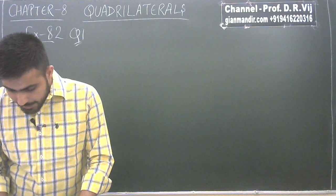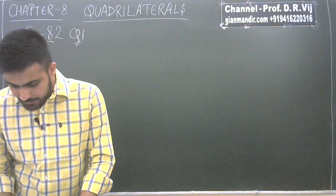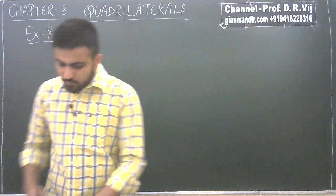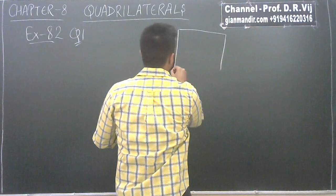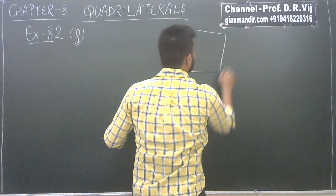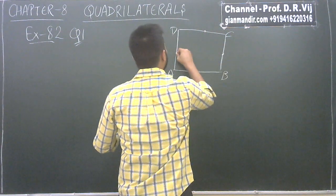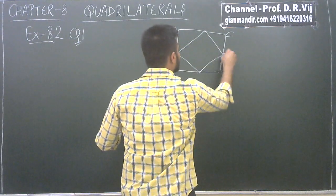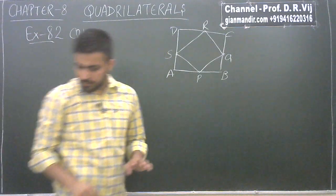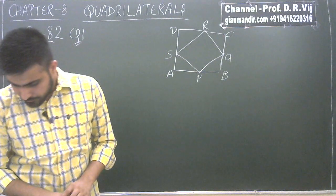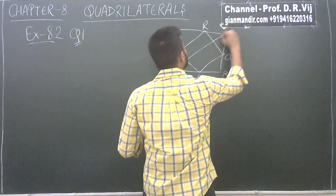Question number 1: ABCD is a quadrilateral in which P, Q, R and S are midpoints of sides AB, BC, CD and DA respectively. Let's first draw the figure. There is a quadrilateral ABCD with midpoints P, Q, R and S. They are given as the midpoints of these particular sides. And the question says AC is a diagonal.